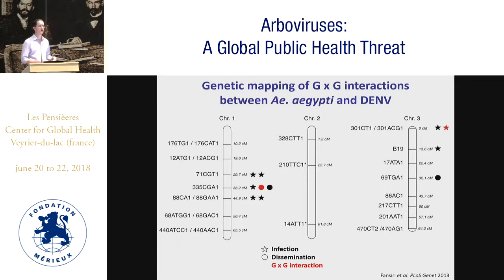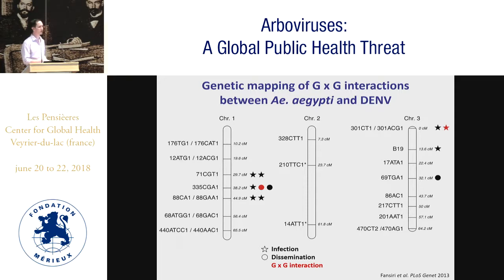A few years ago we conducted a genetic survey to determine whether these genotype-by-genotype interactions could be mapped to physical loci in the mosquito genome. These three vertical bars represent the three chromosomes of Aedes aegypti, and each tick is a microsatellite marker. We found that midgut infection and dissemination are associated with genetic loci in multiple places in the genome, including loci in red that represent the genotype-by-genotype interactions. We are now in the process of fine-mapping these loci to determine which genes are important for vector competence.